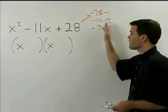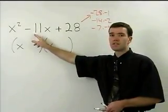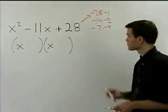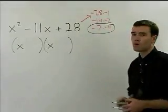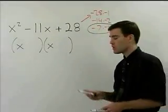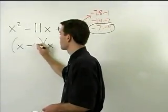So which pair of factors adds to negative 11? The negative 7 and the negative 4. So we're going to use those in our two binomials.